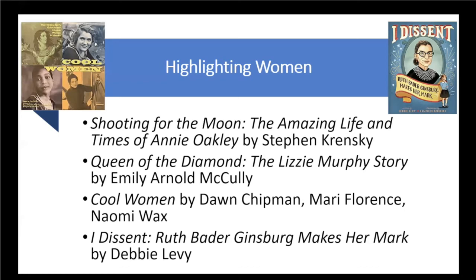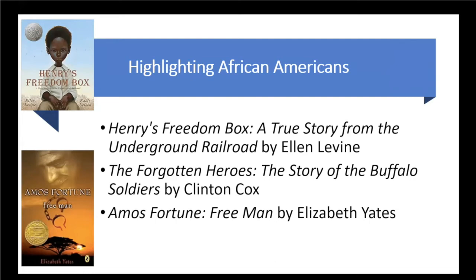My Descent is just one of many books about Ruth Bader Ginsburg and her amazing life and contributions. Shifting to African Americans, there are many, many books. Henry's Freedom Box is a true story of how Henry Brown shipped himself to freedom in a wooden crate. Amos Fortune is a historical fiction that follows the story of Atman, son of a king of the Atmanse tribe in Africa — his capture, his enslavement, his mission to buy his freedom, which he was finally able to do at the age of 60.